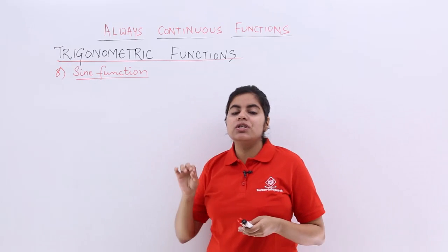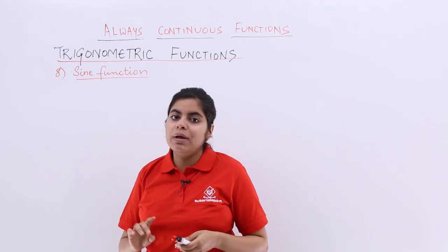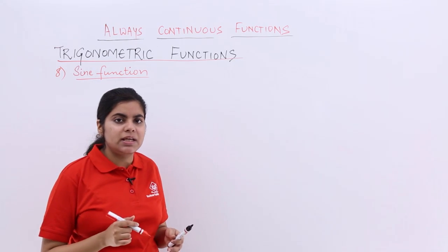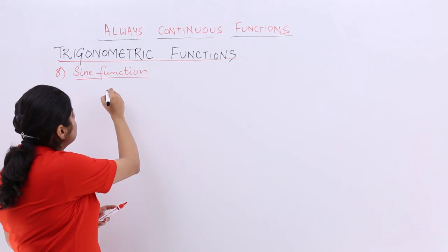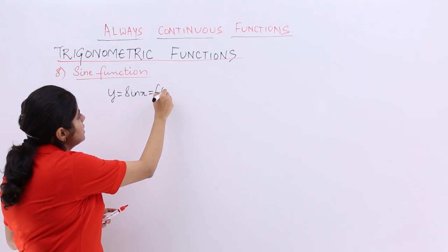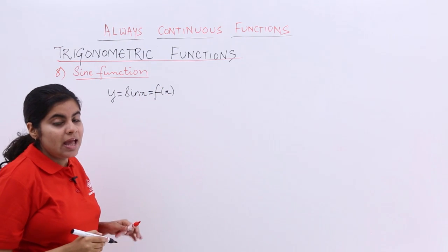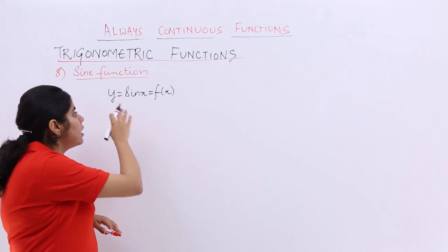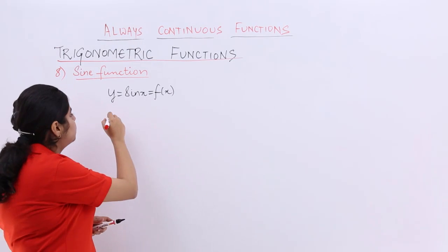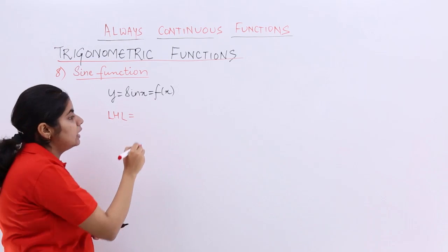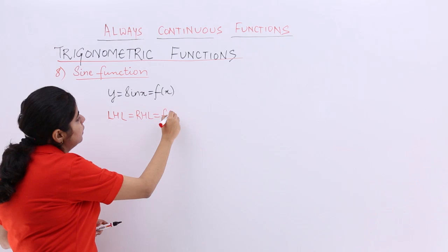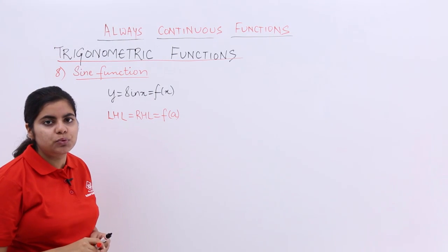Trigonometric functions are always continuous in their domain wherein we are taking up sine function. If you're taking up sine function, that means my function is y equals sine x, or I say it's also equal to f(x). I know that if I need to prove this, I need to basically prove that the left hand limit is equal to the right hand limit is equal to the value of the function. This I need to prove, right?